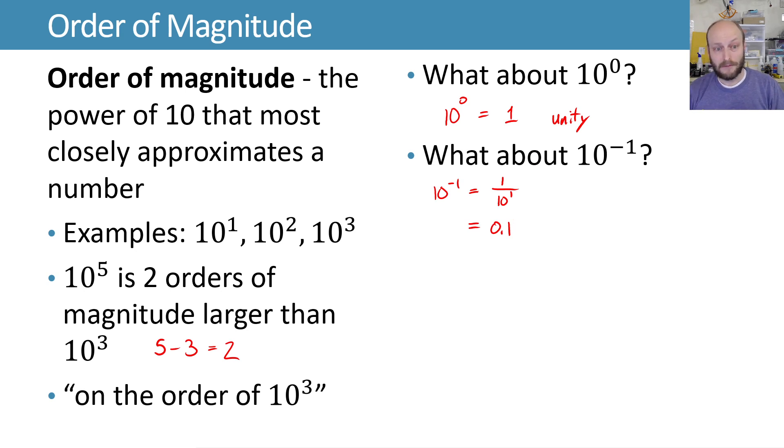So on the order of 10 to the negative 1, that's going to be smaller than 1. You could do similarly things like 10 to the minus third, that would be 1 over 10 to the third, which would give you 1 over 1,000, or 0.001, 1 thousandth.